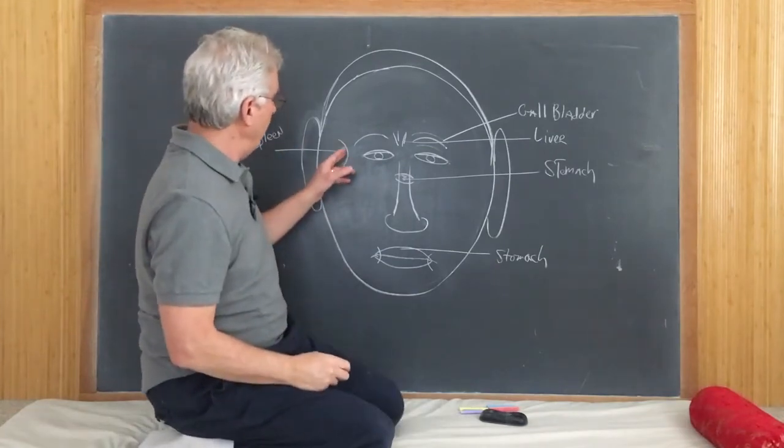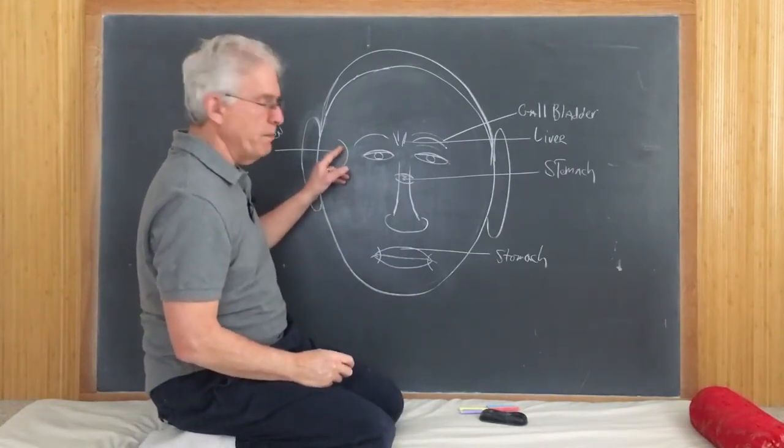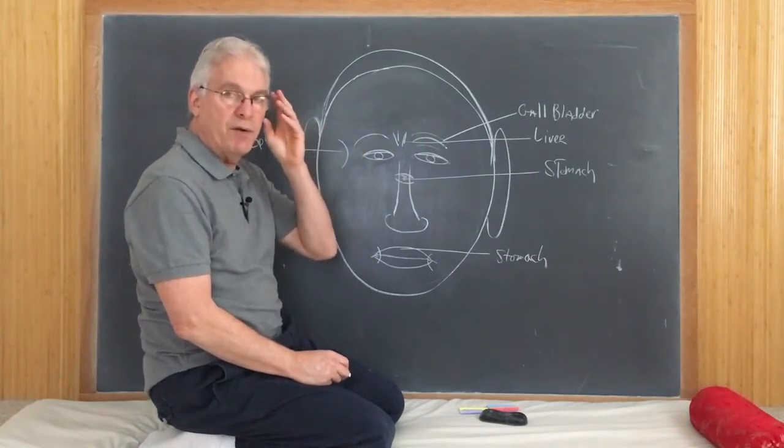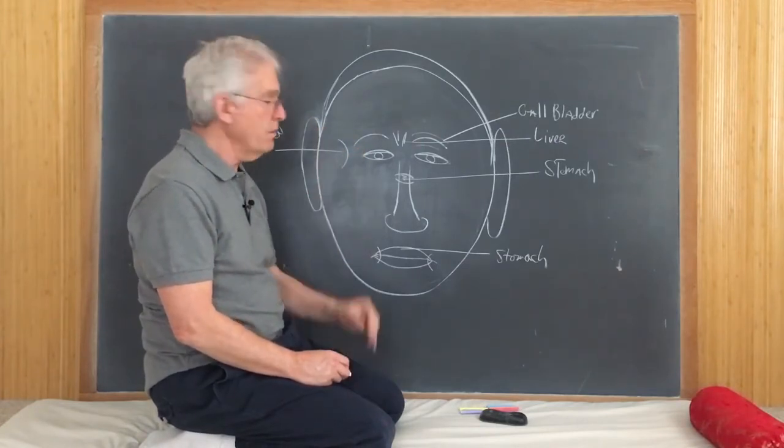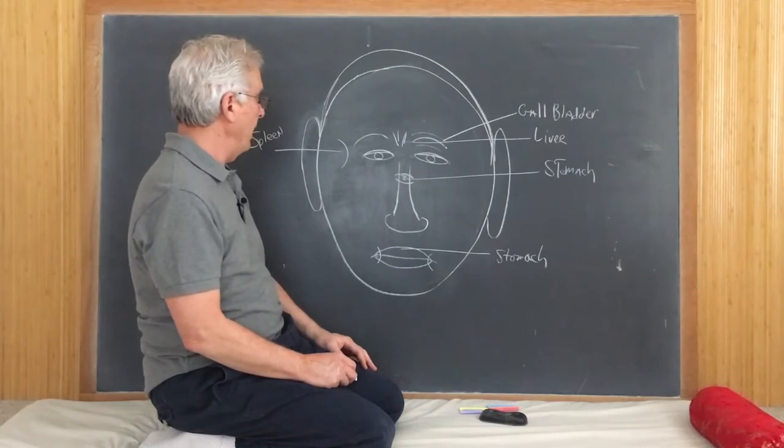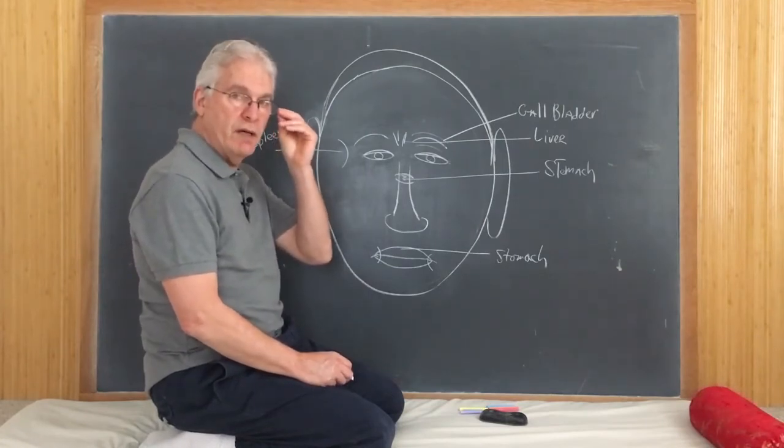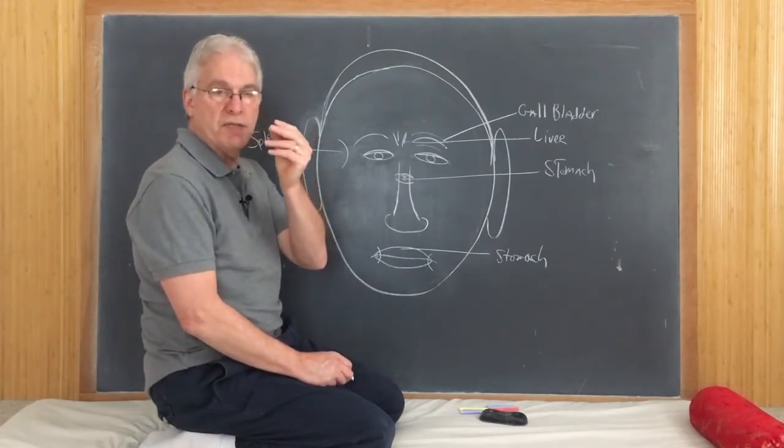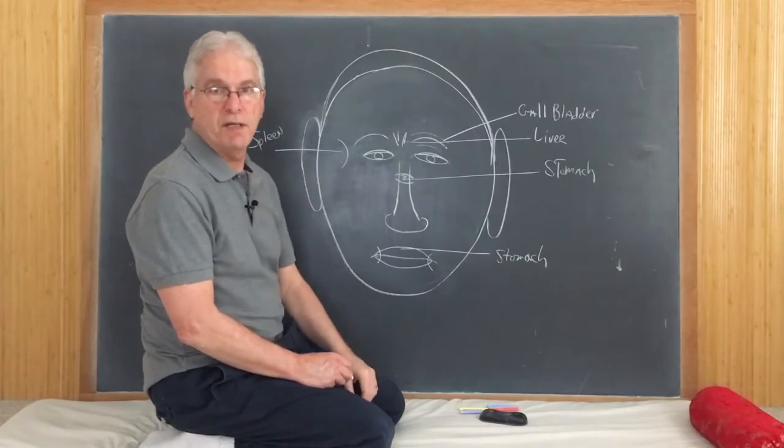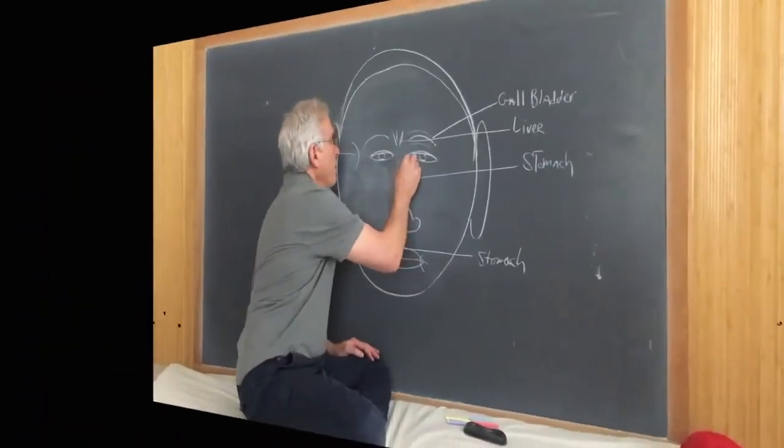Sometimes you see the skin becomes a little bit perforated or again this brown or puffy looking quality to it. But again this perforation of the skin or the pores seeming to be oversized in this location.